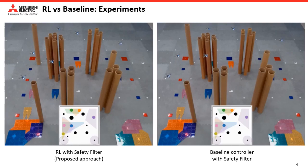We compare the proposed approach — RL with safety filter, shown here on the left — with a baseline shown here on the right. For the baseline we used a motion planner that combines a proportional controller focused only on reaching the target with the proposed safety filter.